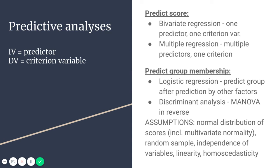The assumptions for predictive analyses are normal distribution of scores, including multivariate normality for the multivariate tests, a random sample, independence of variables, and linearity — your variables should be correlated in some way that makes sense. Homoscedasticity is similar to homogeneity of variance but is the term used for regressions, looking at the amount of random error or unexplained differences. You don't want that to be too high, or your equation is going to be inaccurate.